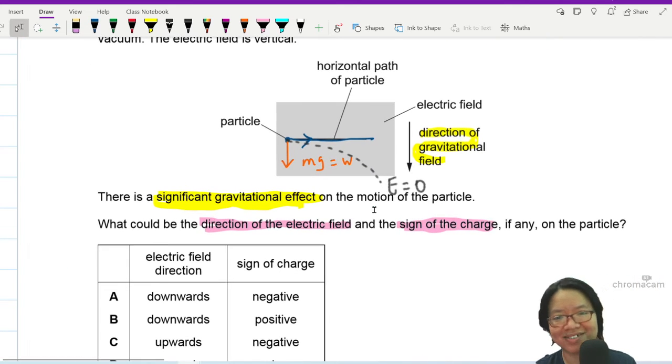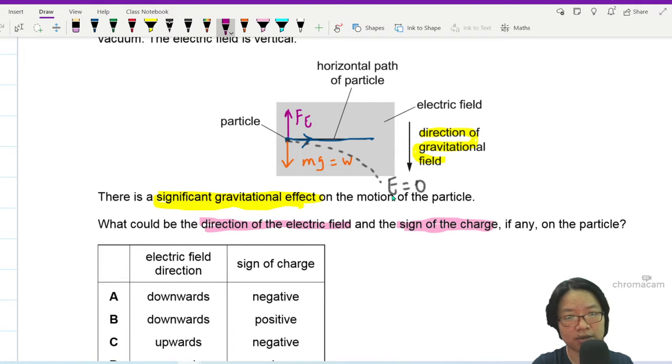Well good news, E is not zero. So to counterbalance your weight, we need an electric field to pull the particle in an upward direction, FE. So basically the direction of FE is up. So I'm going to now have to deduce the direction of FE for each option.